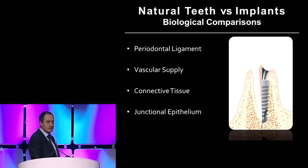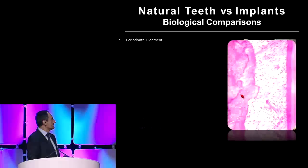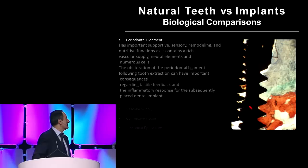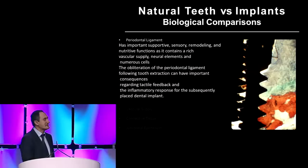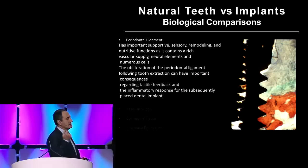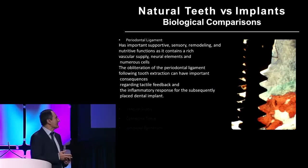We have four components here which are going to be affected when you remove a tooth: the periodontal ligament, the vascular supply, connective tissue, and junctional epithelium. So, this is the periodontal ligament and this is the implant. Well, we are lacking the periodontal ligament when we have an implant. Why is that important? Because the periodontal ligament has a lot of cells, vasculature, nerves, cells that can fight infection, and cells that are involved with inflammation.